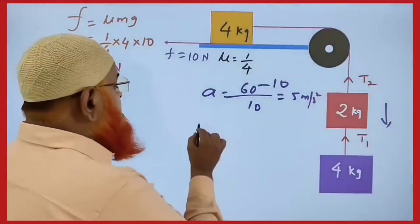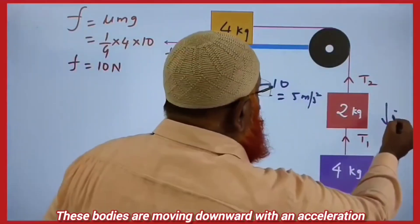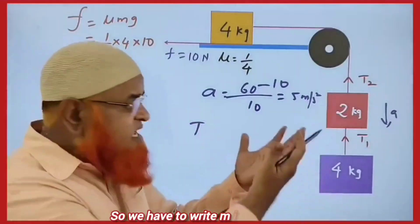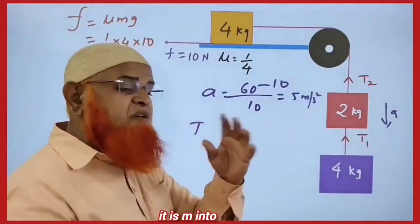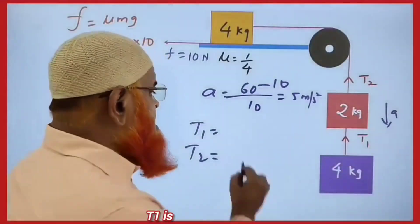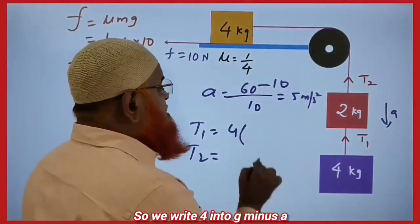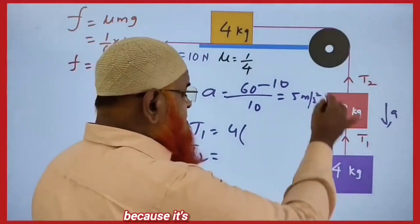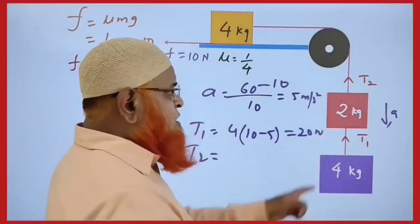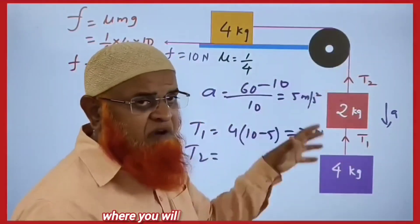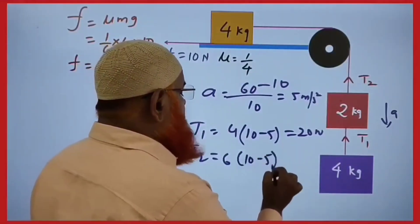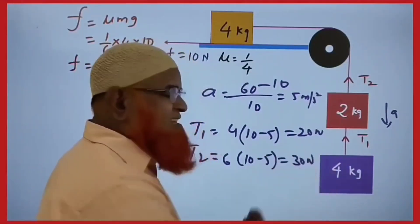Now find T1 and T2. The bodies are moving downwards with acceleration, so we write M into G minus A. T1 is holding only 4 kg: 4 into (10 minus 5) equals 20 N. T2 holds 2 plus 4 combined, which is 6 kg: 6 into (10 minus 5) equals 30 N. That's it.